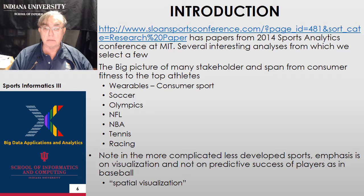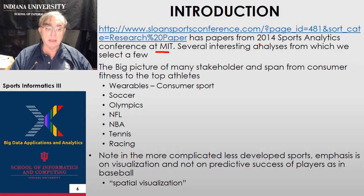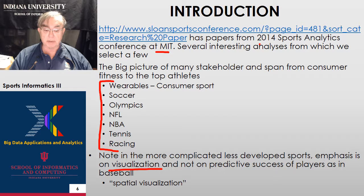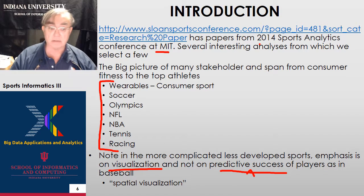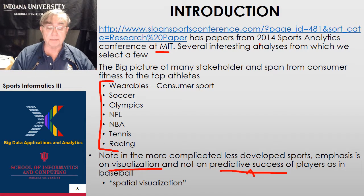This material comes from the MIT conference, and also some I found on SlideShare. The fields we're looking at in order are wearables, soccer, Olympics, NFL, NBA, tennis, and horse racing. There's a big emphasis on visualization and not on predicting success, although we can expect prediction of success to be of growing importance. It's already applied in some of these areas, just not nearly as well discussed as it is for baseball.